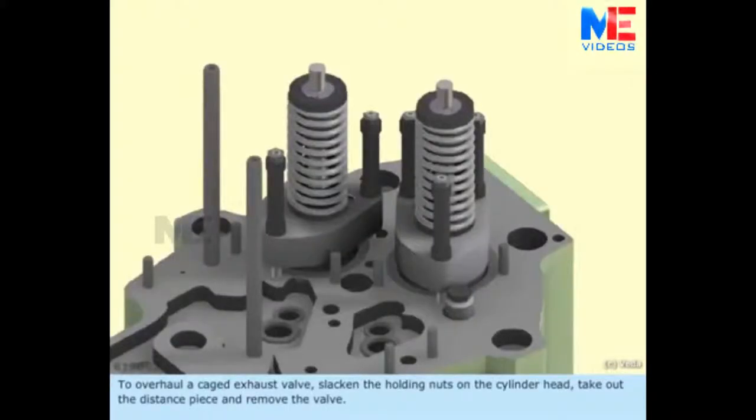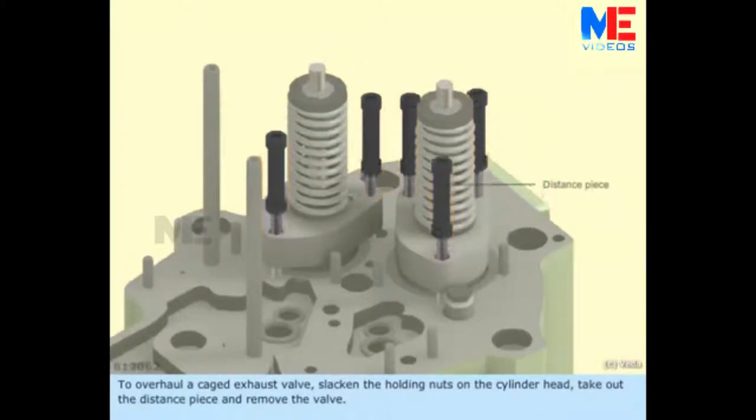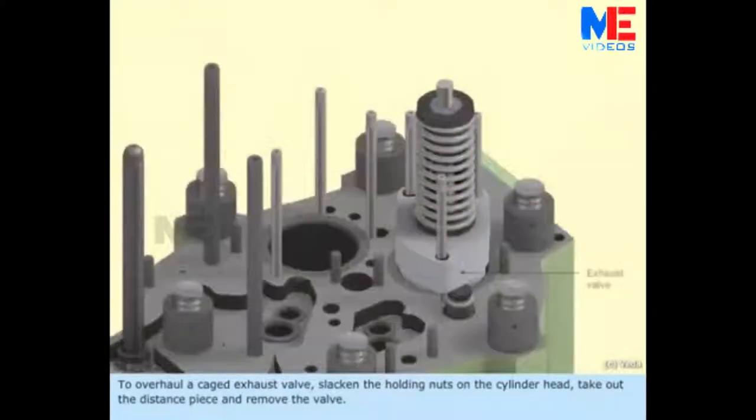To overhaul a caged exhaust valve, slacken the holding nuts on the cylinder head, take out the distance piece and remove the valve.